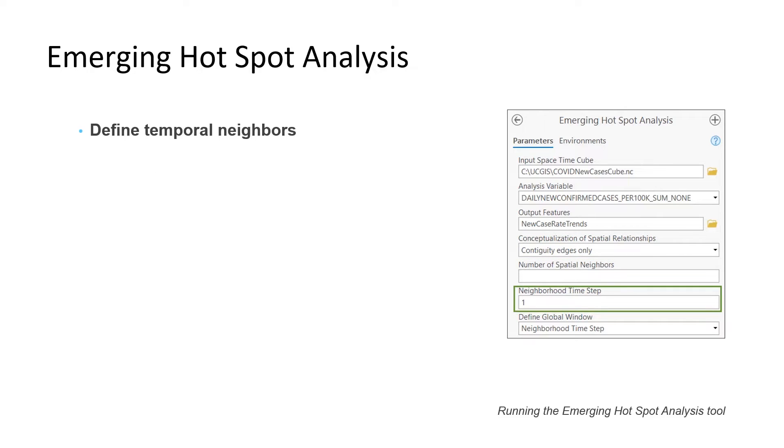Next, we define which bins are included as temporal neighbors. Our time step is 4 weeks. We said that counties that share a border are neighbors, and by setting the neighborhood time step to 1, so are those same bins in the previous time step.